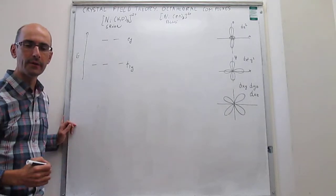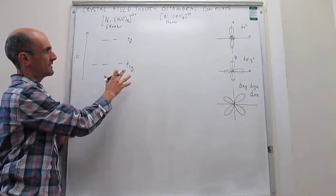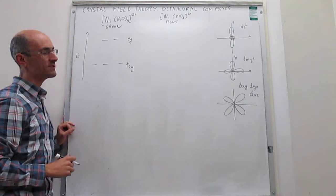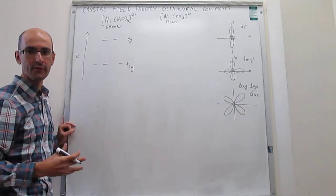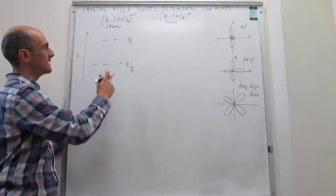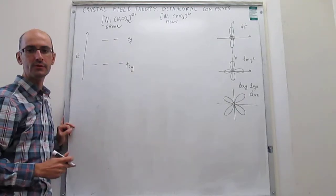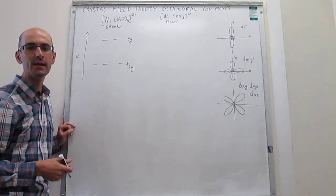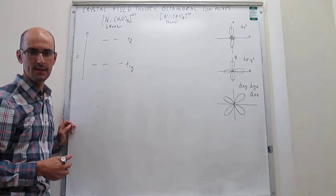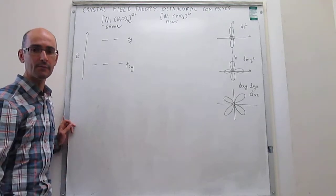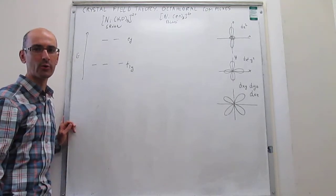Something that is important about this separation between eg and t2g orbitals in transition metals when you have an octahedral environment is that the gap between those two sets of orbitals, what we call the splitting, depends on the ligand.